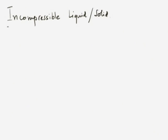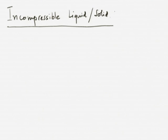This brings us to the topic of the model of the incompressible liquid or incompressible solid. The same model is applicable in either case. Just the way the ideal gas is an approximate model — a good model for many real gases in a reasonable range of pressures and temperatures — the incompressible liquid or solid is also a good model for real liquids and solids over a reasonably narrow range of pressures.